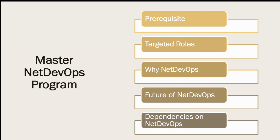Here we are not going to just learn 'this is Python, this is this, this is that.' We are going to keep in mind the networking skills we have — I know how OSPF works, how BGP works, how switching works, how a router works, how a firewall works, what these devices are. Now we will learn how to automate and use those devices and technologies in a way that makes our day-to-day network operations easier.